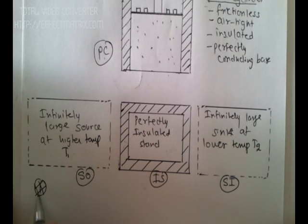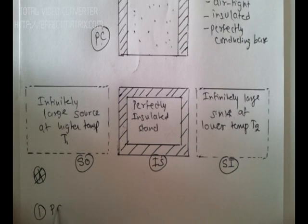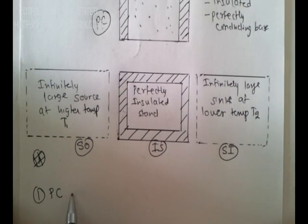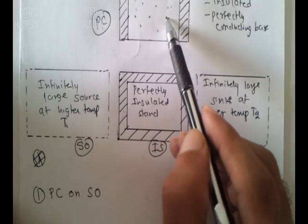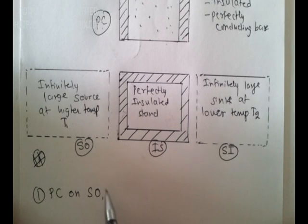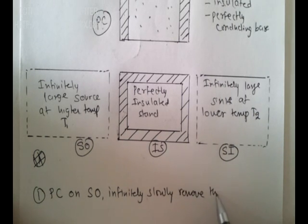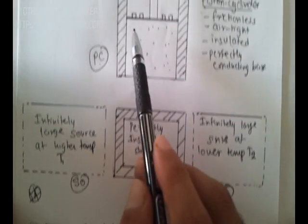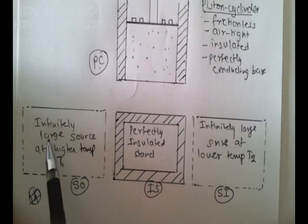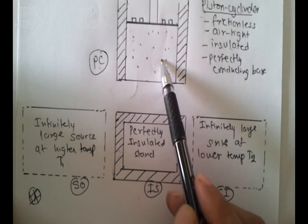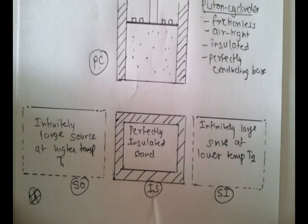The first step is to put the PC — the piston cylinder arrangement — on SO. The temperature of the gas here is T1 and we infinitely slowly remove the weights. What happens in this process is you are removing the weight slowly so there is expansion happening, but since the gas is in contact with an infinitely large source at temperature T1, the temperature of the gas is maintained at T1. Temperature remains constant even though expansion is happening, and therefore this process is isothermal expansion.